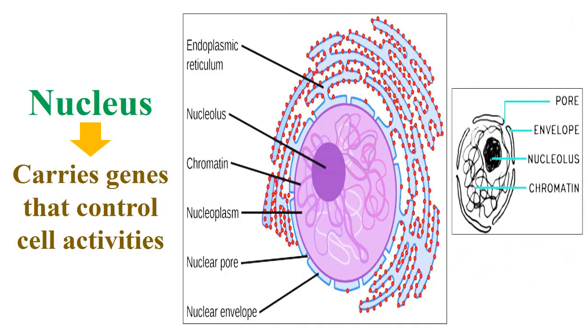Nucleus carries genes that control cell activities, in the form of chromatin, which contains chromosomes and histone proteins.